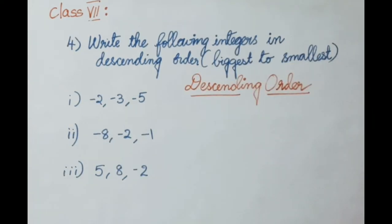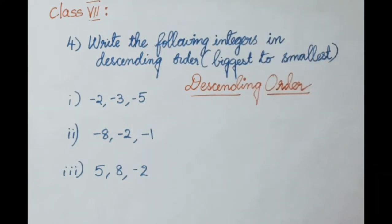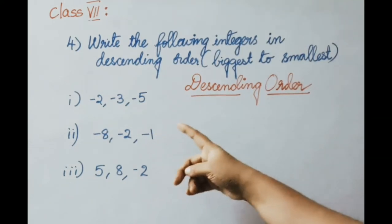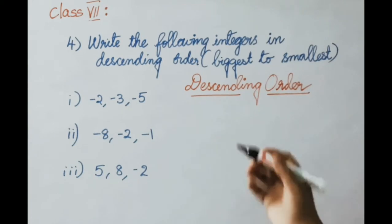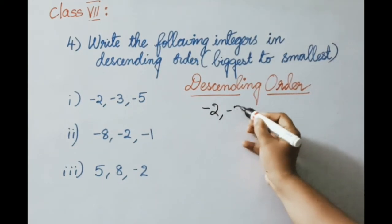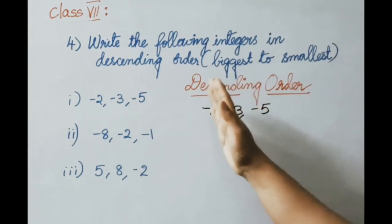See the fourth question. Write the following integers in descending order. Descending order means arranging numbers from biggest to smallest. The numbers are minus 2, minus 3, minus 5. On the number line, writing from right to left gives us the descending order: minus 2, then minus 3, then minus 5. We have arranged the numbers from biggest to smallest.